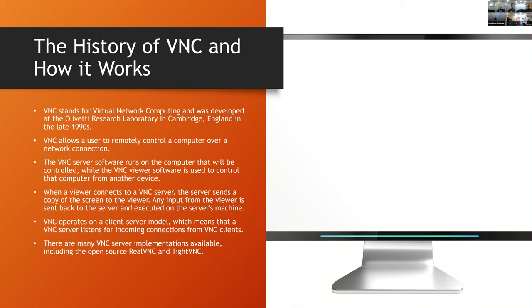VNC - late 90s - basically it's Virtual Network Computing. Depending on which flavor you have, it's basically shoveling images across as a motion JPEG or MJPEG. Some flavors have smarter algorithms that only change blocks of data, but it's still very bandwidth-intensive and chatty, and is not great for performance, especially over a remote slow line.